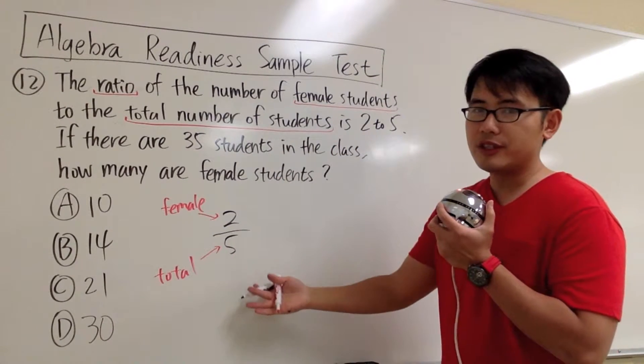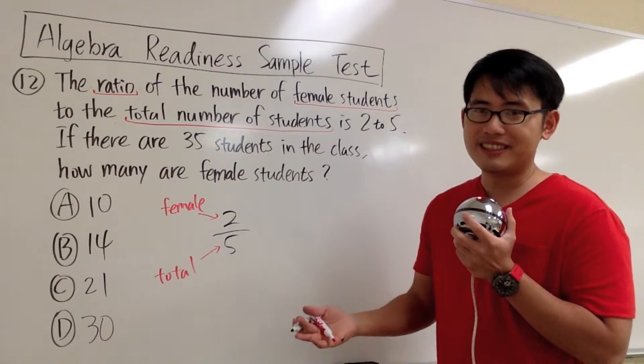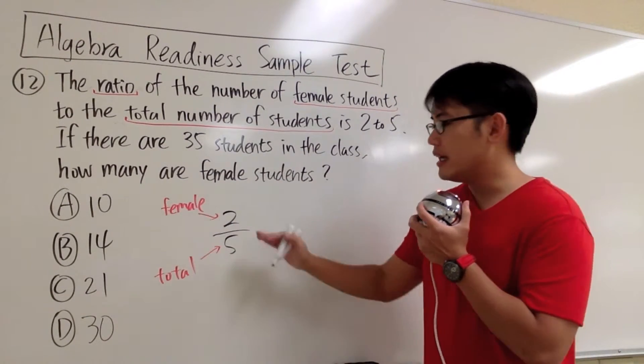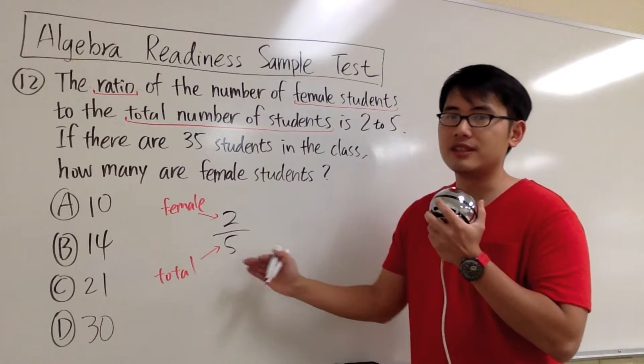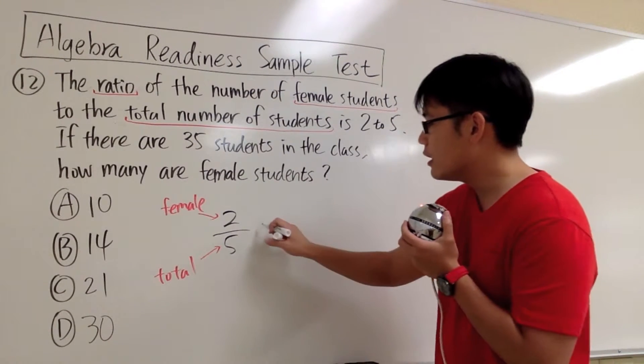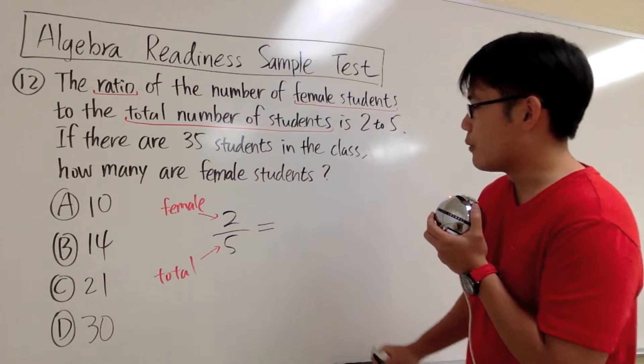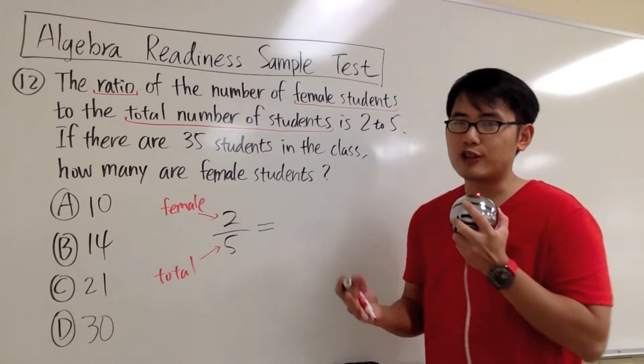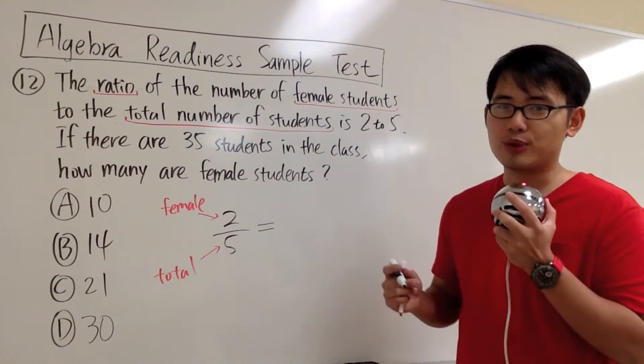If we want to set up the fraction this way, we just have to be consistent. The number on top will represent female students, and the bottom number will represent the total number of students. I'm going to set up a proportion. When we have 2 fractions equal to each other, it's called a proportion.